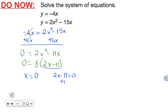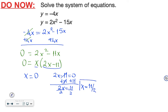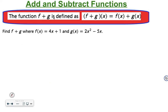From here, if you add 11 to both sides, you get 2x equals 11. Dividing both sides by 2 gives x equals 11 over 2, or 5.5. This is the answer.